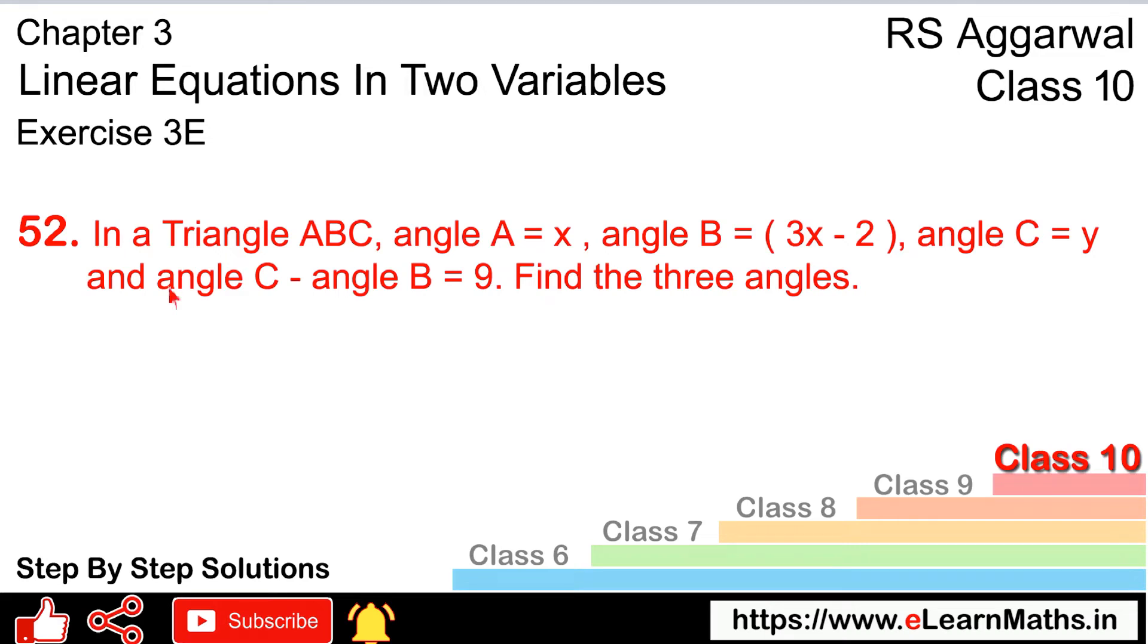Let's do question number 52 of Exercise 3E, that is linear equations in two variables. Question number 52 is: In a triangle ABC, angle A = x degrees, so we will make a triangle, look, this is a triangle, right?